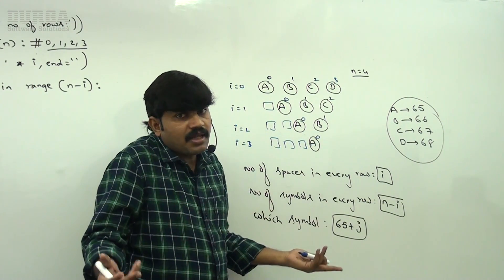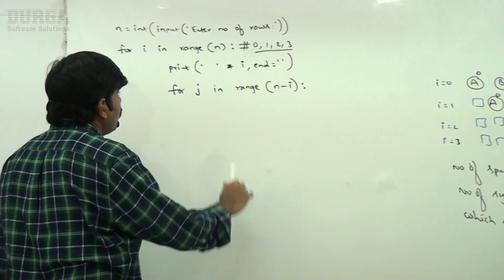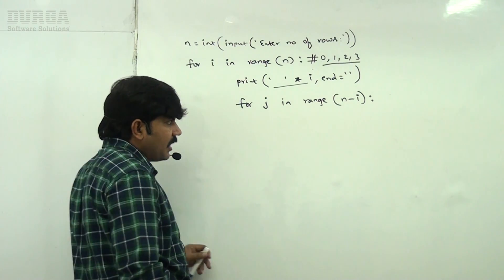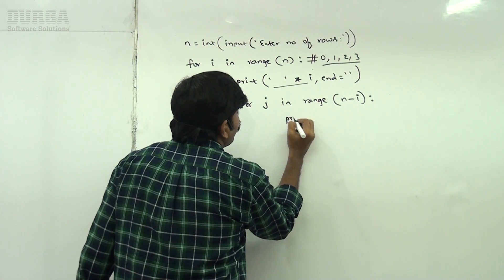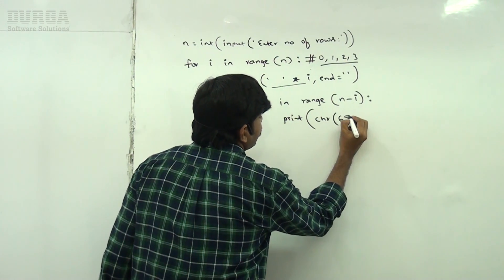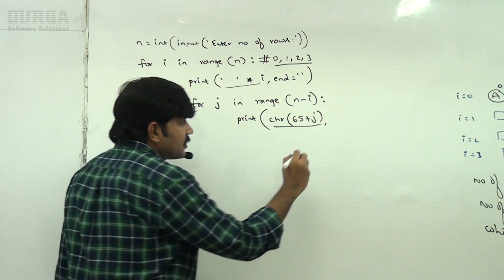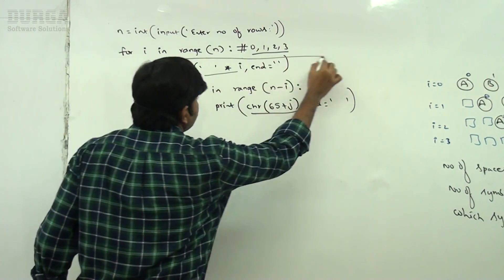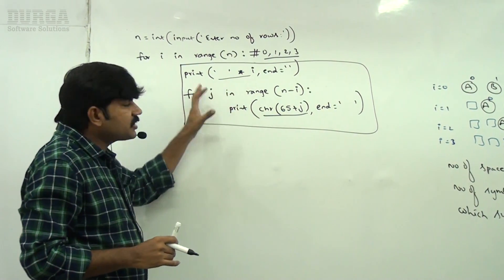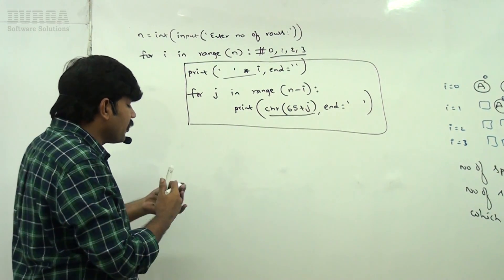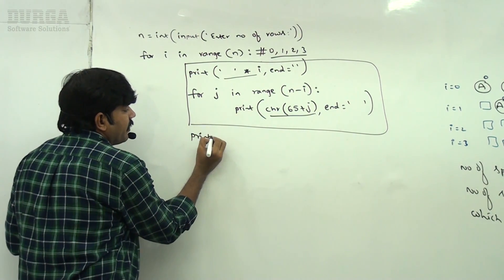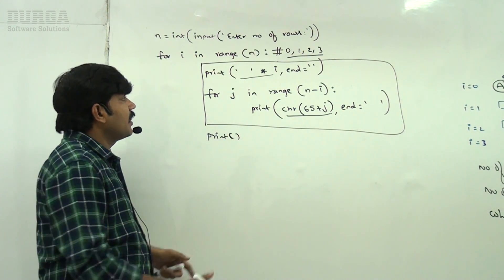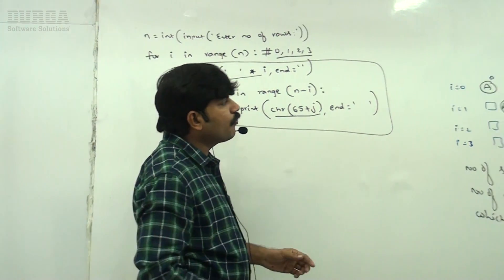Print chr(65 + j) followed by a space, repeated n minus i times, and the pattern will be ready. So the structure is: for i in range of n, print i number of spaces with end equal to empty. Then for j in range of n minus i, print chr(65 + j) with end equal to space. After each row, print a blank line to move to the next line.